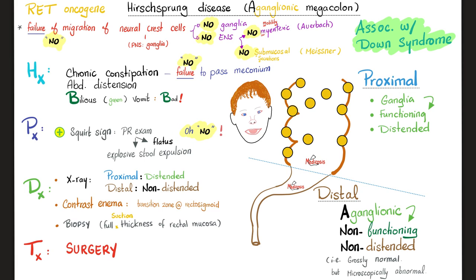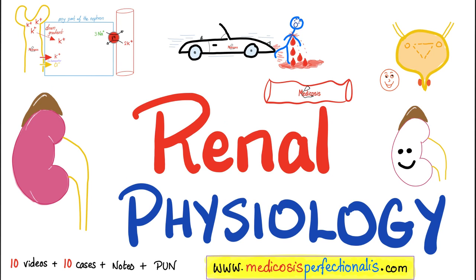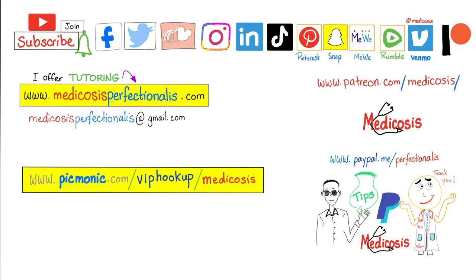It's associated with Down syndrome, and Down syndrome patients have a singular palmar crease rather than the double palmar crease of normal people. This topic of Hirschsprung disease is part of the surgery high-yields course, downloadable at medicosisperfectionalist.com — 12 hours of videos. There's also a renal physiology course. Thank you for watching. Please subscribe, hit the bell, and click the join button. Be safe, stay happy, study hard. This is Medicosis Perfectionalist, where medicine makes perfect sense.